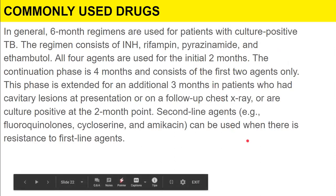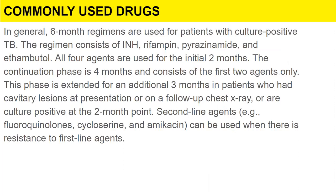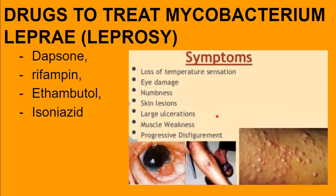Six-month regimens are commonly used for culture-positive TB patients. The regimen consists of isoniazid, rifampin, pyrazinamide, and ethambutol — all four agents for the initial two months. The continuation phase is four months with isoniazid and rifampin only. This phase is extended by three additional months in patients with cavitary lesions, a positive follow-up chest X-ray, or a culture positive at the two-month point. Second-line agents are used when resistance to first-line agents occurs.